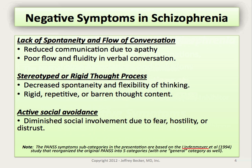Regarding the negative symptoms of schizophrenia, we see a number of different categories, and it depends on the person and the underlying genetics as far as what symptoms are worse in a given patient. It's very common to see a lack of spontaneity and flow in conversation. There are often stereotyped or rigid thought processes with decreased spontaneity and flexibility. There can be active social avoidance and diminished social involvement, often due to fear, hostility, or distrust, even of loved ones and good friends.